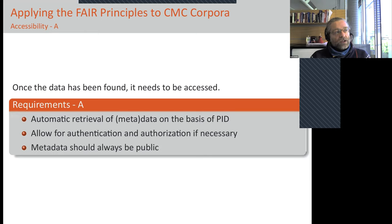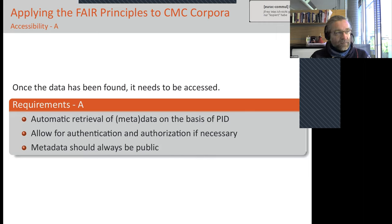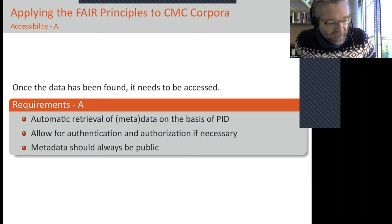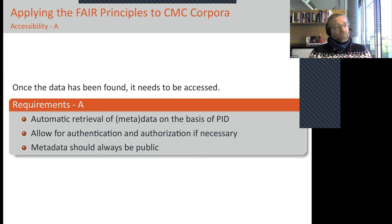The FAIR guiding principles do not necessitate that the corpus needs to be freely or openly available — data access can be restricted. However, all the data about the corpus should always be made publicly available. That means if your corpus data can only be shared on the basis of a certain inquiry, you can still make it available along FAIR principles, but the metadata should always be public.